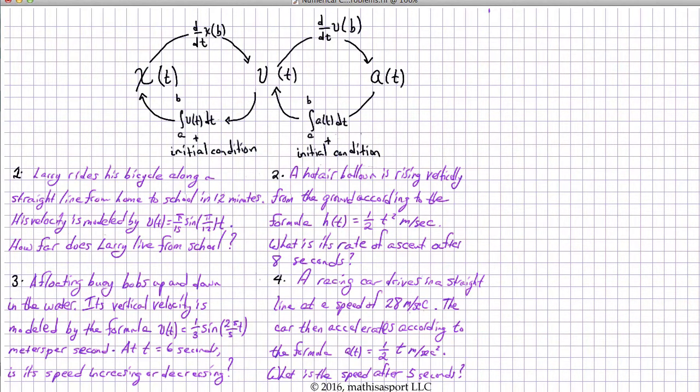Well, we find the area under the velocity curve over this period of time, this 12-minute period from 0 to 12. And that will give us the distance between 0 and 12 in time, which is going to give us the distance to school.